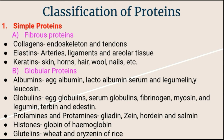Histones are soluble in water and dilute acid, are uncoagulable on heating, and are predominantly basic in nature. They yield a large amount of diamino acids on hydrolysis. Examples of histones are globin of hemoglobin and histones of nucleoproteins.